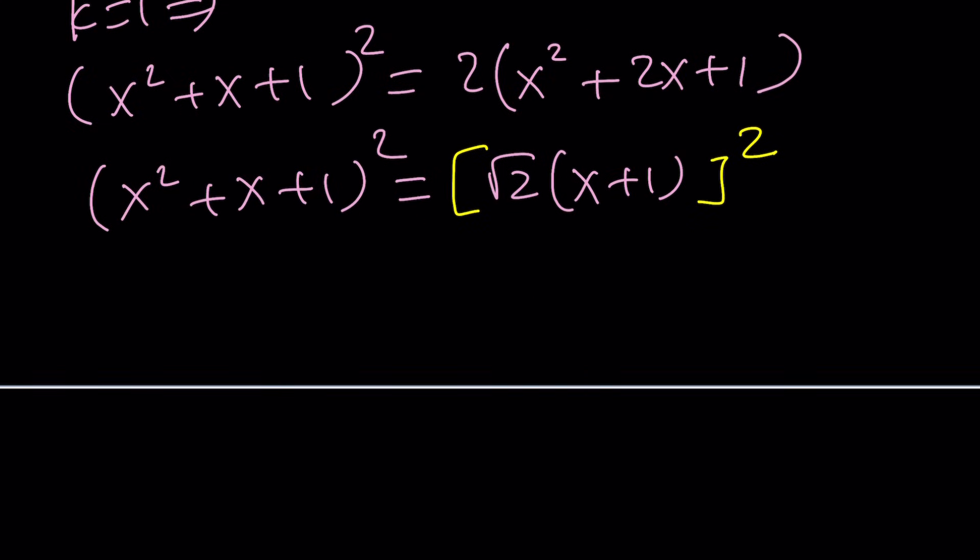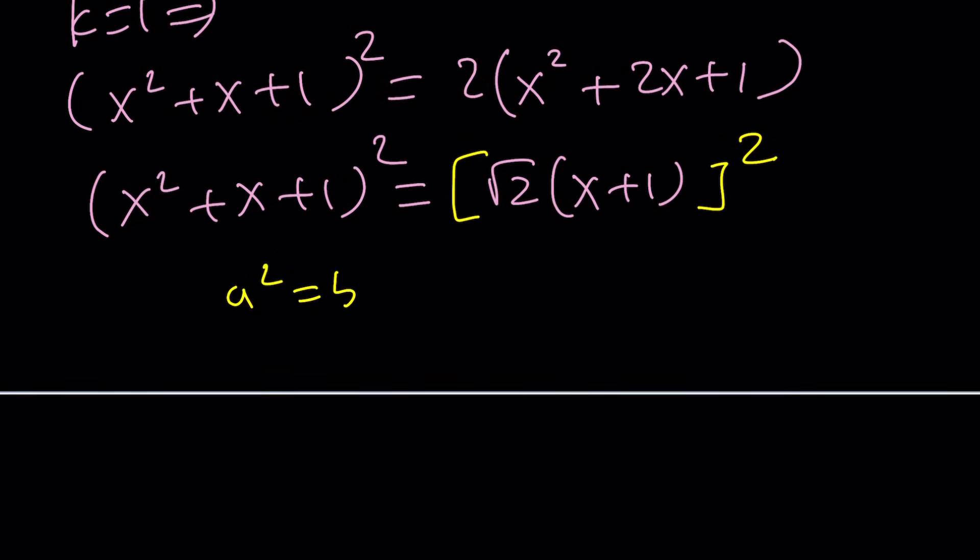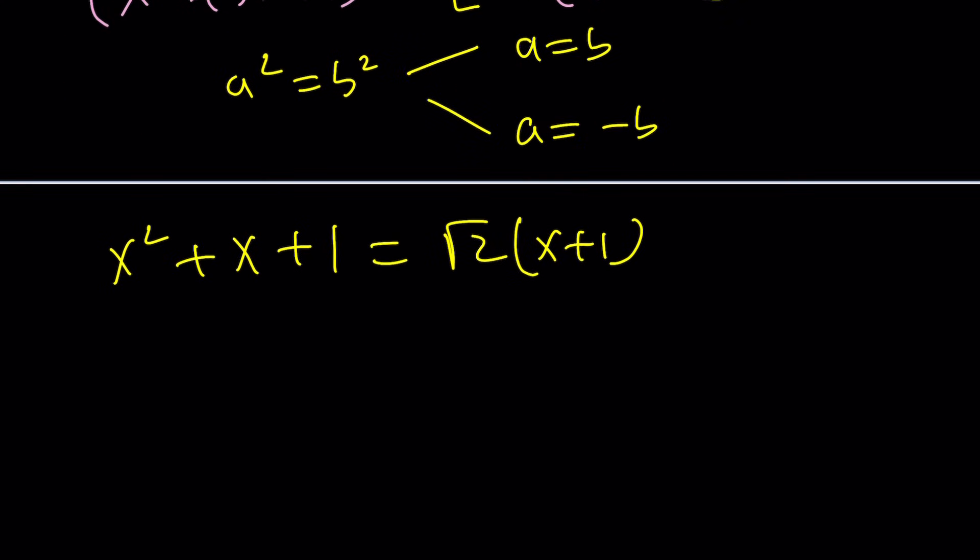Now we have two squares on both sides or either side. So we can square root both sides and look at the plus minus because if a squared is equal to b squared, that implies two things from absolute values, a equals b or a equals negative b. Think about it. So now we have the following solutions. x squared plus x plus 1 is equal to root 2 times x plus 1. Let's go ahead and work it out and we'll get back to the negative solution. I mean the negative version.